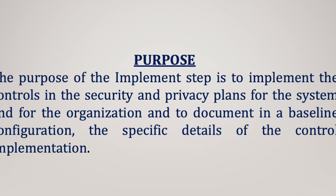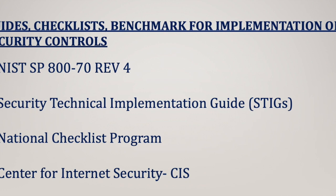While looking at the implement step, let us see what are some of the guidelines, checklists, and benchmarks for implementation of security controls. The relevant NIST publication for implementing security controls is NIST 800-70 revision 4. In this publication, you will see the national checklist program template, where you will find the things that need to be implemented — the areas and controls that need to be configured on the system — enumerated on that checklist program, irrespective of any application or system you are working on.